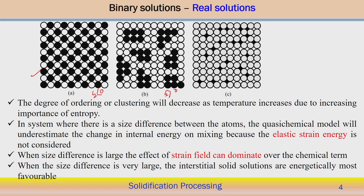Therefore, in a system, apart from reducing the enthalpy of mixing, there is another factor — called the size difference of atoms — which is very important in the case of the real solution. Definitely, in a real solution there might be atoms with almost similar size forming a binary solution, but there can also be a wide difference in the size of the atoms. So the size effect will also matter in case of the real solution.